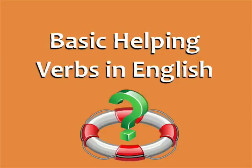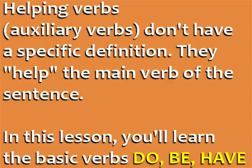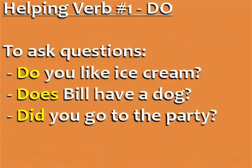Basic helping verbs in English from espressoenglish.net. Helping verbs, or auxiliary verbs, don't have a specific definition — they help the main verb of the sentence. In this lesson you'll learn how to use the basic helping verbs do, be, and have. Use the helping verb do to ask questions: do you like ice cream?